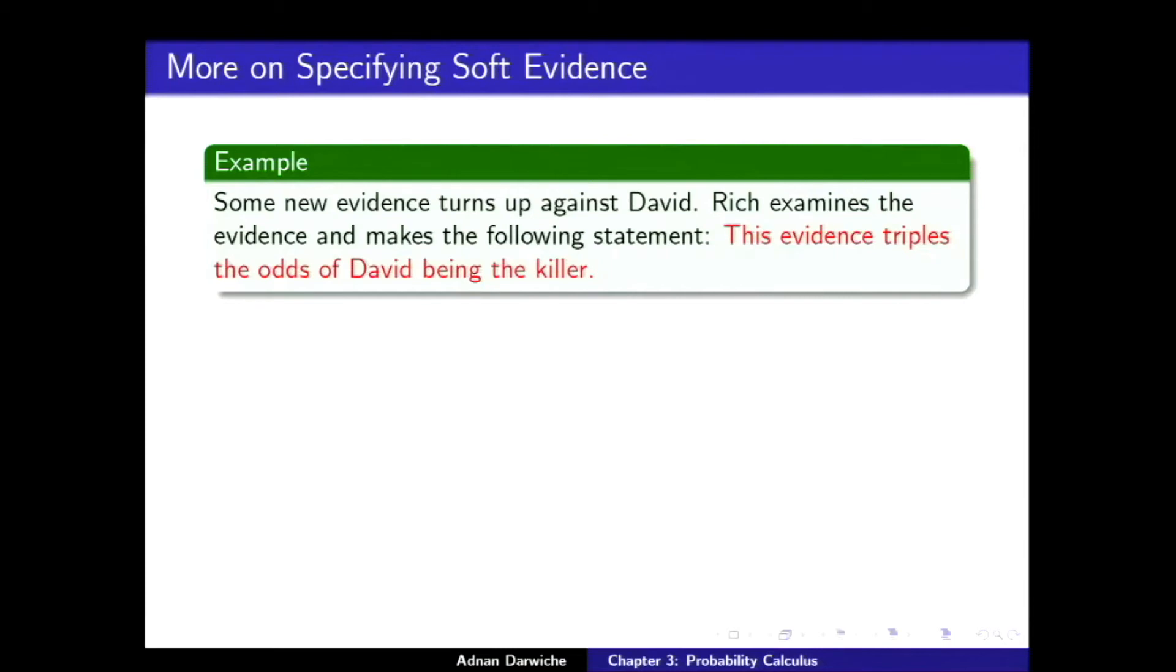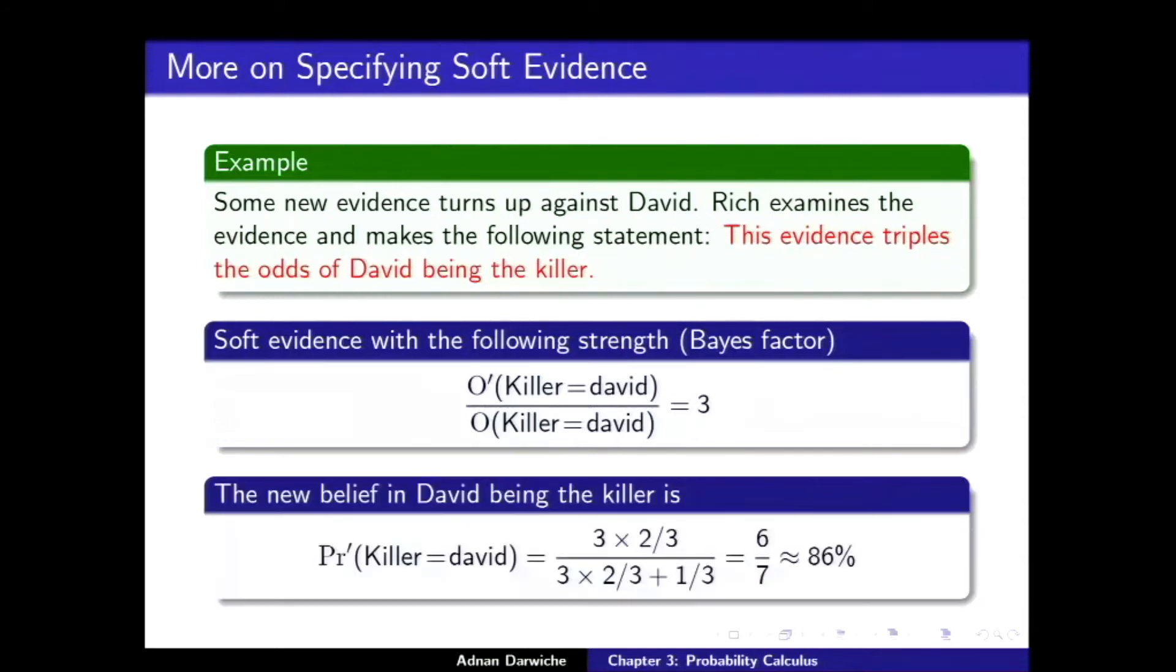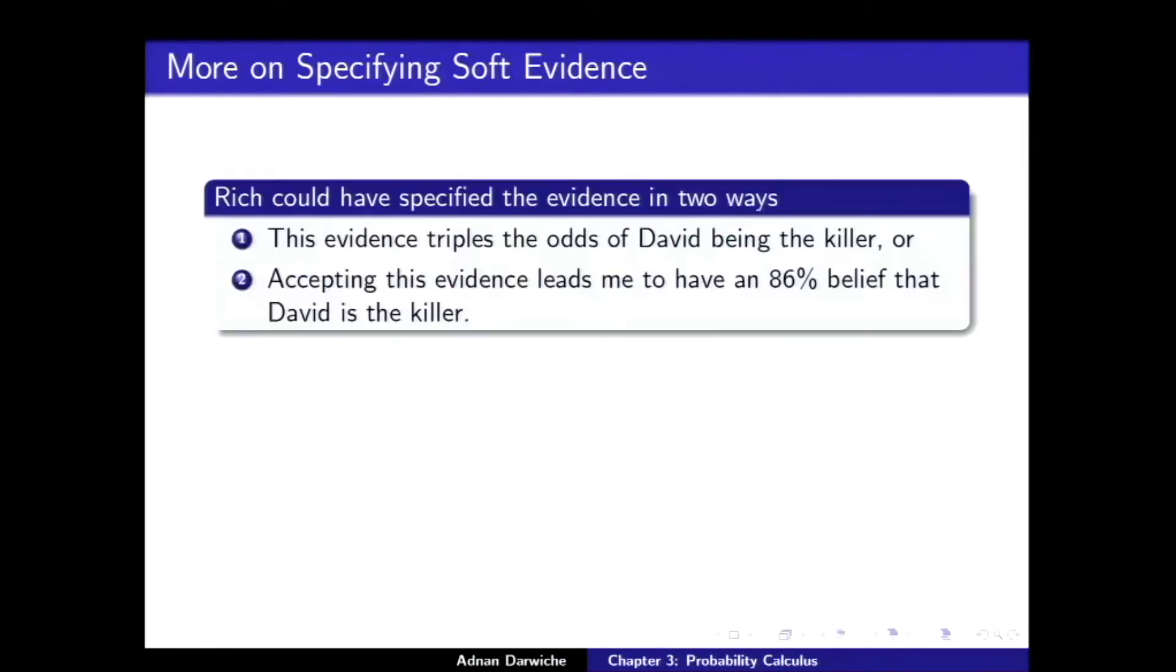Now, we want to update Rich's state of belief. And we have the equation. This is Bayes Factor 3. We plug into that equation. And now, the probability of David being the killer after accommodating this new evidence is 86%. What was it? Around 66%. So, this evidence triples the odds of David being the killer. Or, the other way of saying it. Accepting this evidence leads me to have an 86% belief.